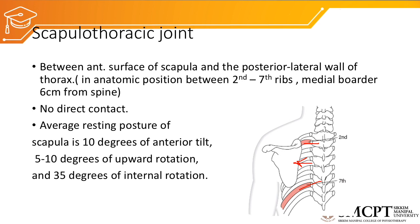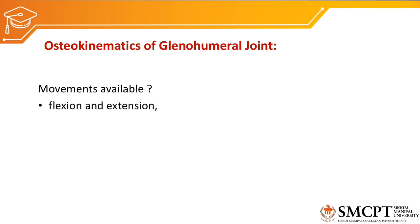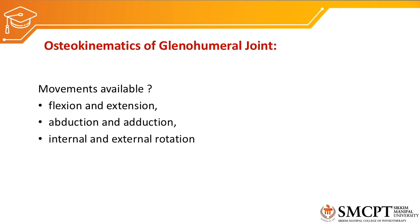Now let us discuss the osteokinematics of the glenohumeral joint. When discussing osteokinematics we need to mention the movements occurring at the joint, the planes and axes at which the movement occurs, and the range of motion. The movements occurring at the glenohumeral joint are flexion and extension, abduction and adduction, internal and external rotation, and horizontal abduction and horizontal adduction.